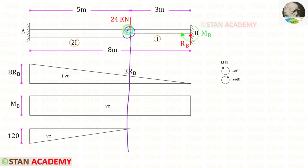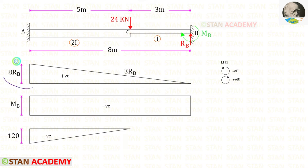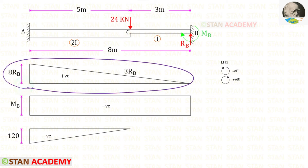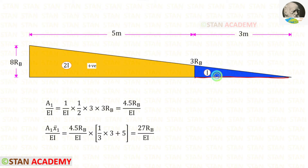On the left of C the moment of inertia is 2I, and on the right of C it is I. So we have to separate all the diagrams into two parts. First let us take this triangle and find the areas. Let us take the right side triangle and keep this as number 1. Let us find Area 1 upon EI.